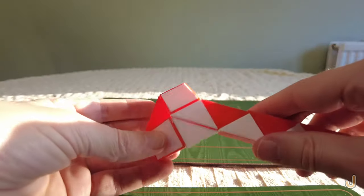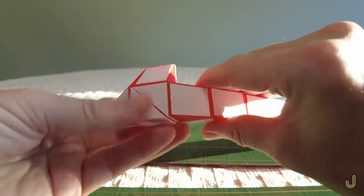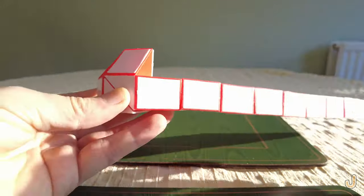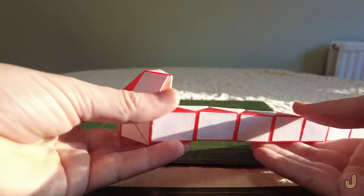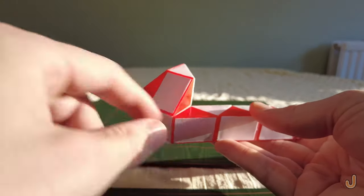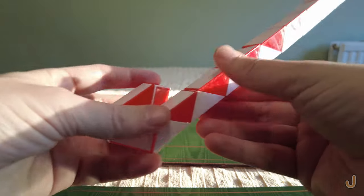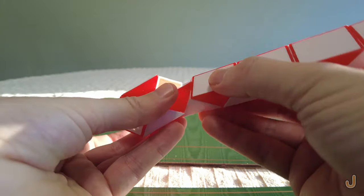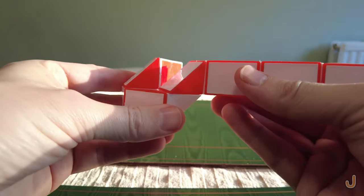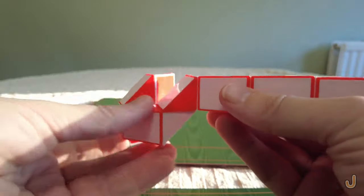Now you twist this one notch away so that the snake is horizontal. Now you bend it just one triangle and you turn it upwards. Now you bend this towards you and then flip the piece round.